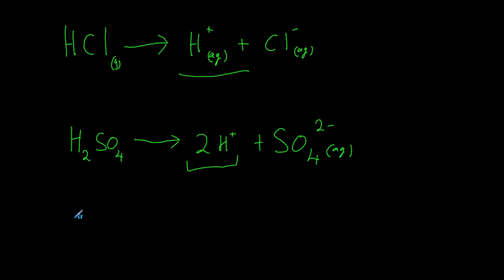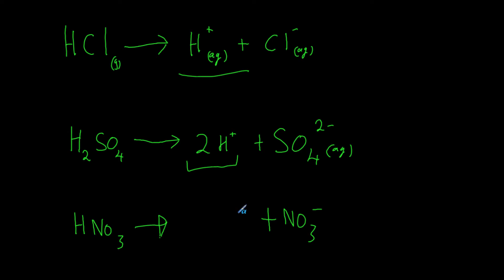Now pause the video and try to write the dissociation of nitric acid. Nitric acid has only one hydrogen and NO₃, which is the nitrate ion. With only one hydrogen giving a plus one charge, the nitrate ion has a minus one charge, giving NO₃⁻ and H⁺. Notice that the charges always balance: we have a 2⁻ on sulfate because we have two lots of H⁺, so plus one plus one makes two, balanced by the two minus.